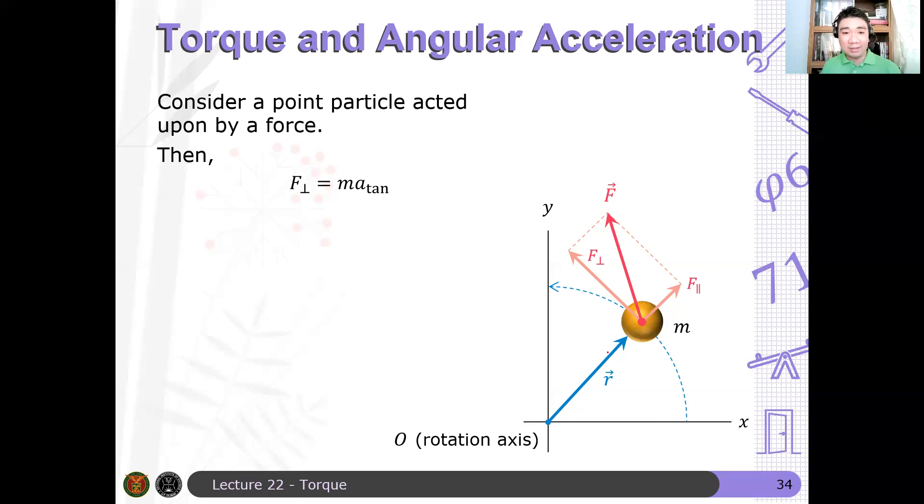We will assume that the point particle is just rotating or moving in a circle of some radius r. And therefore, I can express the tangential acceleration in terms of the position vector r. So I can write this as m times the length from the axis of rotation to the mass times some angular acceleration, let's say alpha z.